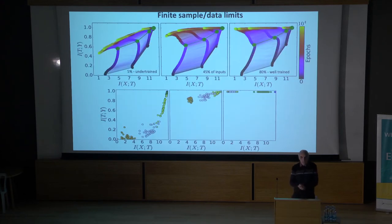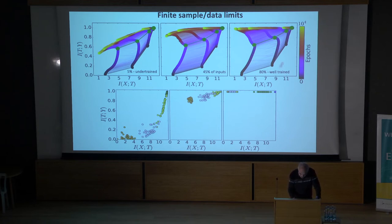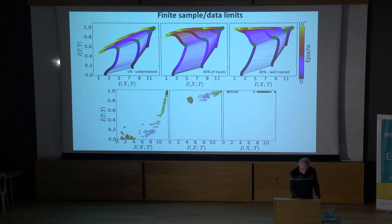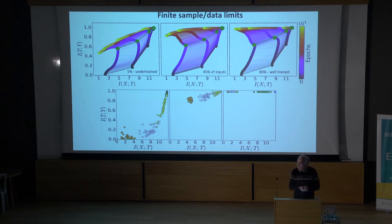When we reduce the number of samples—looking at 5% of the data—you see it's under-trained. Something strange happens: if you continue training, you actually lose information about the label, which means you overfit or over-compress. This is precisely where early stopping can help you.